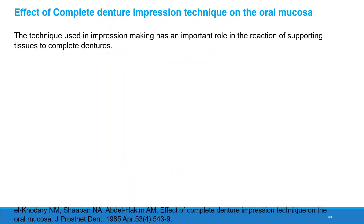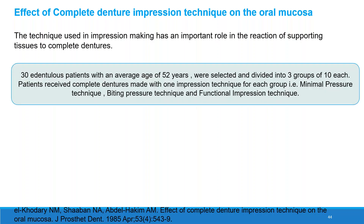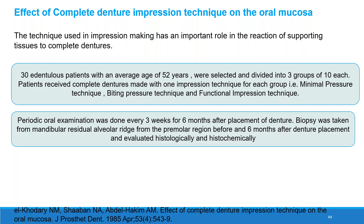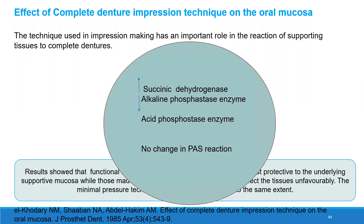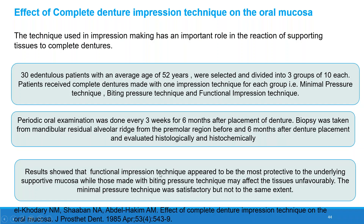Effect of complete denture impression technique on oral mucosa. The technique used in impression-making has an important role in the reaction of supporting tissue to the complete denture. In this study, 30 edentulous patients with an average age of 52 were divided into three groups using three impression techniques: minimum pressure technique, biting pressure technique, and functional impression technique. Periodic examination was done every three weeks for six months, checking succinate dehydrogenase, alkaline phosphatase, and acid phosphatase enzymes. Results showed that the functional impression technique was most protective to the underlying supporting mucosa, the biting pressure technique affected tissues unfavorably, and the minimal pressure technique was satisfactory but not to the same extent.